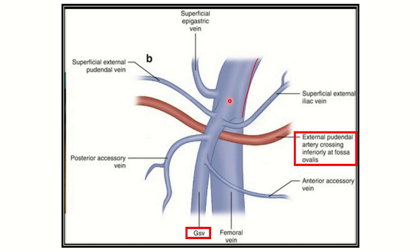Here we can see — this is the femoral vein and this is the great saphenous vein. This is the junction point of the femoral vein and great saphenous vein, because the great saphenous vein drains into the femoral vein here. We have to find out the structure which is very closely related to this saphenous and femoral vein.